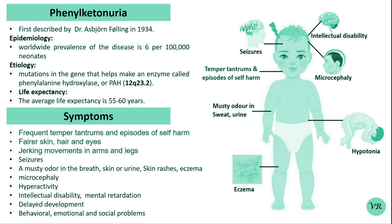Missense mutations change a single amino acid in the enzyme, which affects enzyme activity. Nonsense mutations create a premature stop codon, leading to a truncated and non-functional protein.